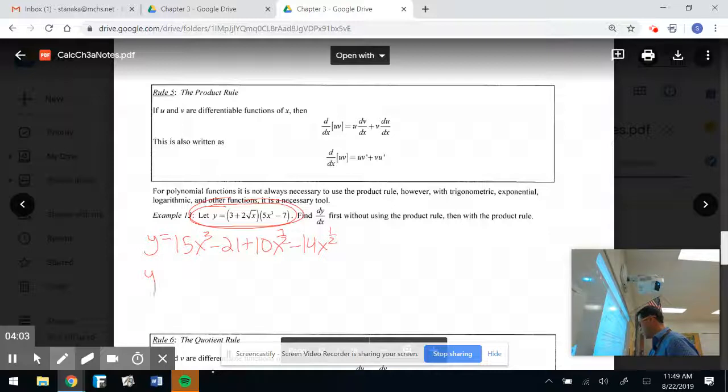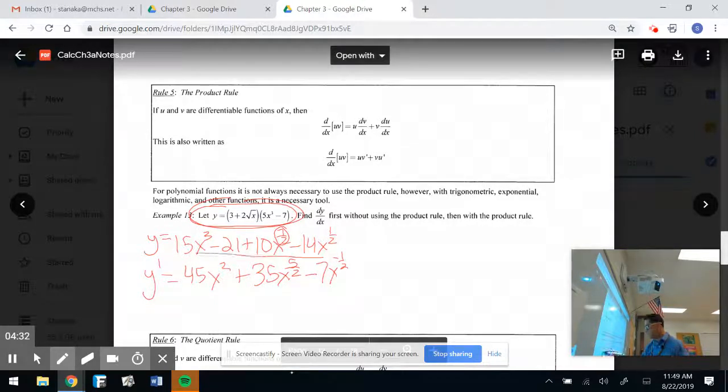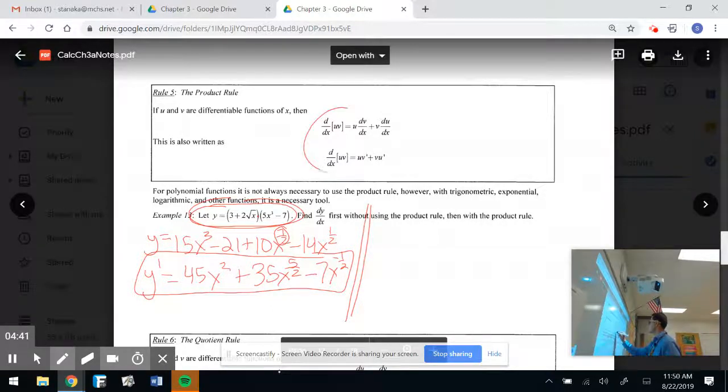Now, when I do the derivative, I get 45x squared. That 21, right class, goes away. I get plus, let's drop that 7 halves down. If I drop that 7 halves down, I get 70 over 2. 70 over 2 is 35x. I have to subtract 1. So, 7 halves minus 2 over 2 is 5 over 2 minus, drop that half down, 14 becomes a 7x to the negative 1 half. That is 100% legit. That is good to go. But if you notice, at the beginning of the problem, that is a product, which thus means I could use what we call the product rule.